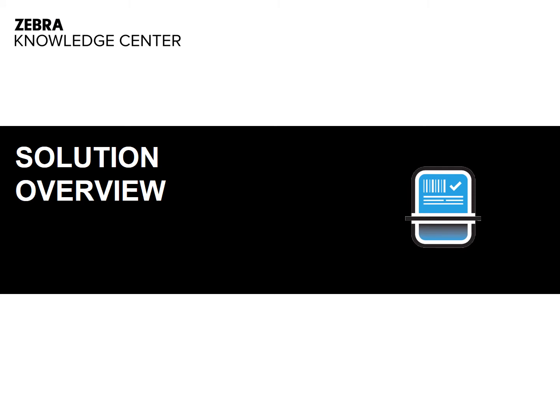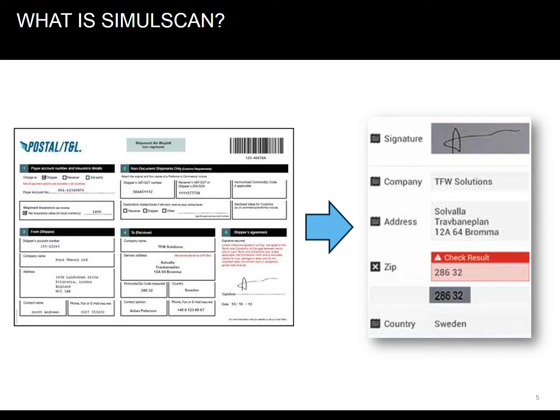Let's have a look at what SimulScan is. SimulScan document capture allows workers to capture the contents of an entire form in a single scan, including barcodes, text fields, phone numbers, images, signatures, checkboxes, and more. The software can then automatically enter those elements' data into business applications and allow users to review that data. Will this improve productivity, increase worker efficiency, accuracy, improve cycle times and error rates?